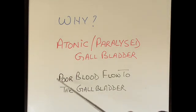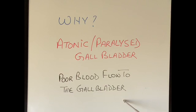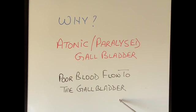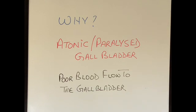The same thing happens in patients on ventilators with multiple organ failure, renal failure, or severe lung problems. Their blood pressure is very low, so different parts of their body — their legs, arms, brain, and heart — are all getting less blood than they normally require. The gallbladder is no exception. In these patients, there is not enough blood going into the gallbladder to keep it alive, and they are at very high risk of developing acalculous cholecystitis.